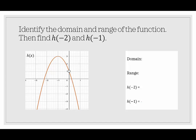In our last example, we're going to identify the domain and range and then find h of negative 2 and h of negative 1. For the domain, there appears to be no furthest left and no furthest right, but there is something missing in the middle — the domain is not defined at 0. So we pull 0 out of the domain and write it as two intervals: from negative infinity to 0, and from 0 to infinity, using parentheses to show 0 is not included. The domain is (−∞, 0) ∪ (0, ∞).